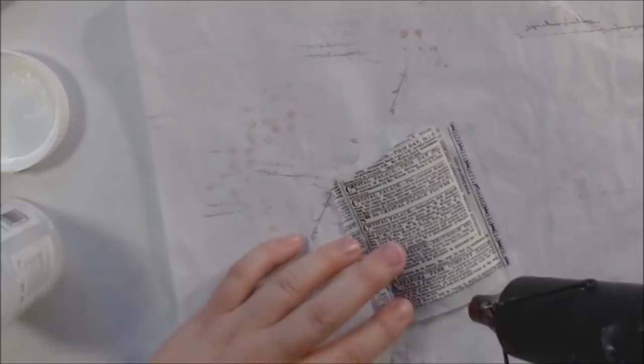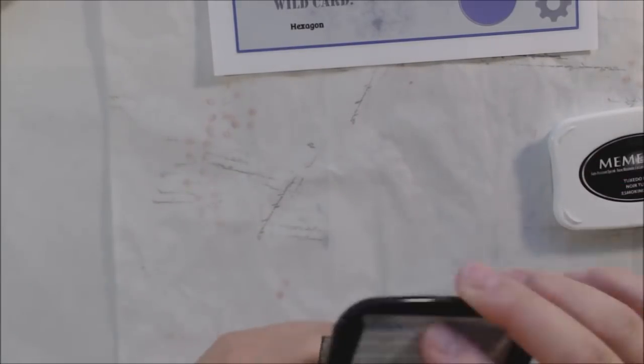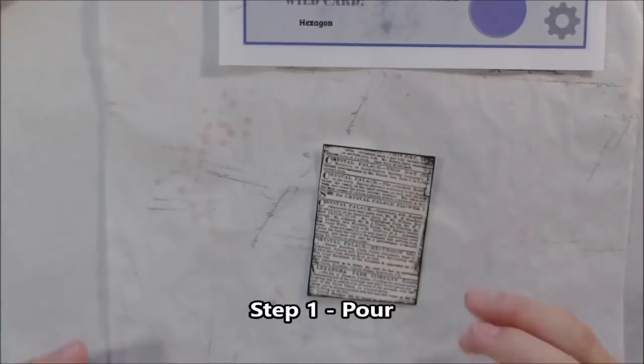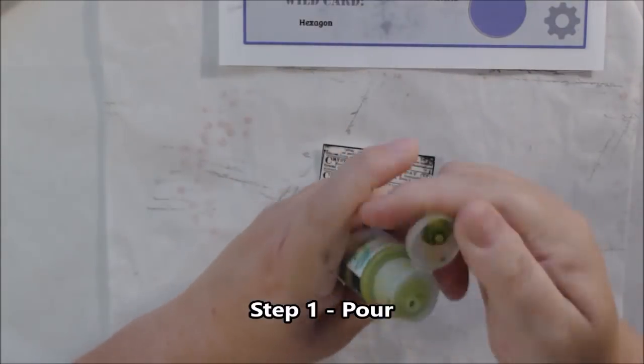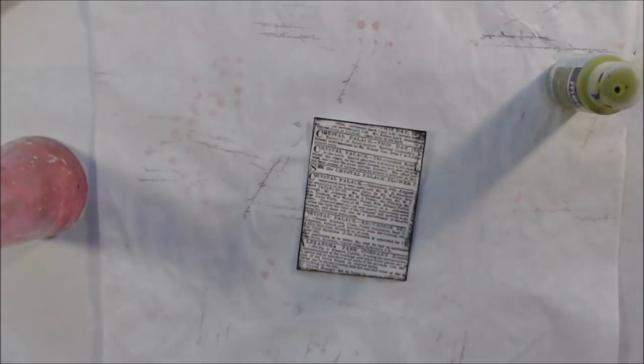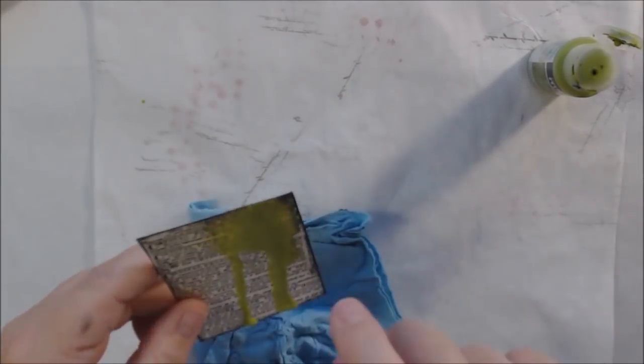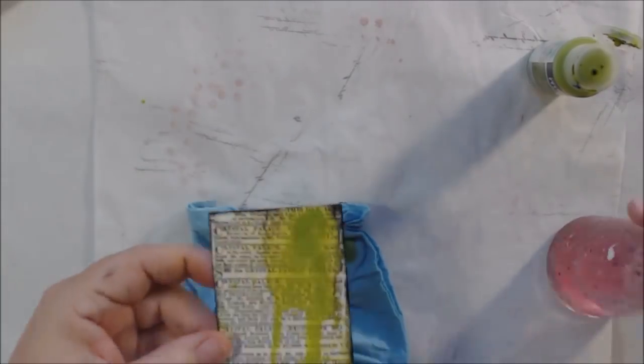For day 14, I decided to do my pick a stick challenge ATC. Every month we have an art journal page challenge and an artist trading card challenge with randomly picked one word prompts and color prompts. I started out on 140 pound watercolor paper cut two and a half by three and a half inches.